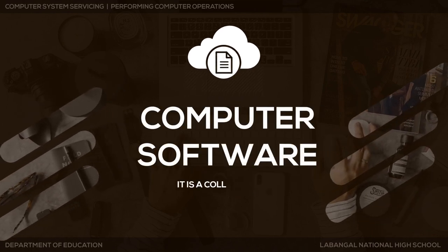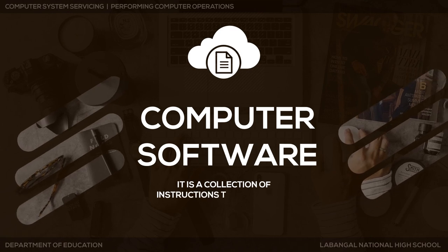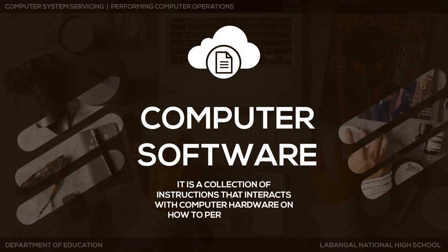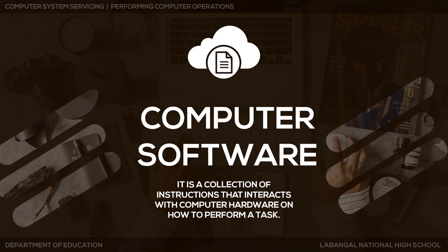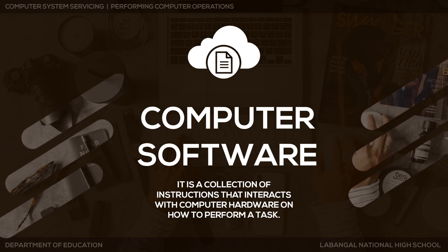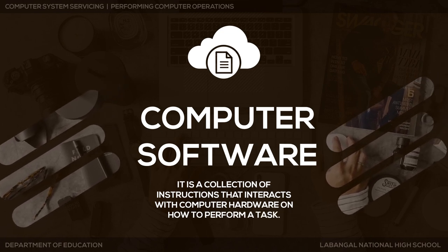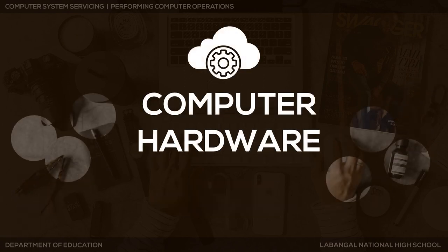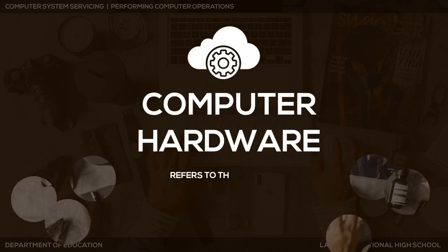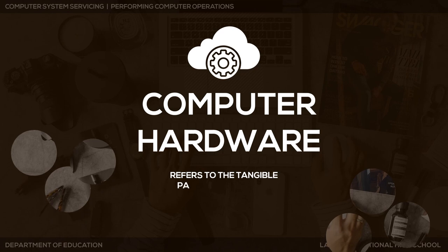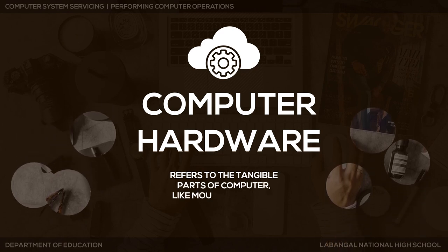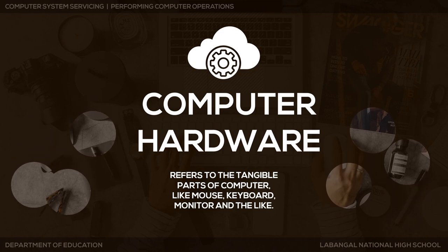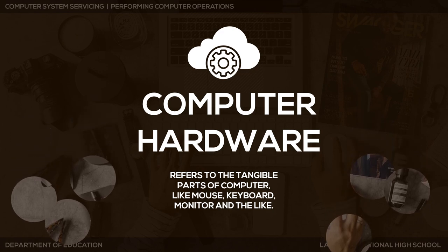Computer software is a collection of instructions that interacts with computer hardware on how to perform a task. Computer hardware refers to the tangible parts of a computer, like the mouse, keyboard, monitor, and the like.